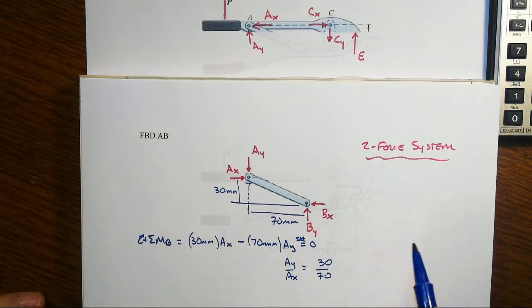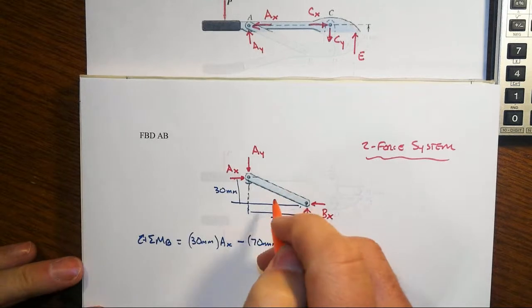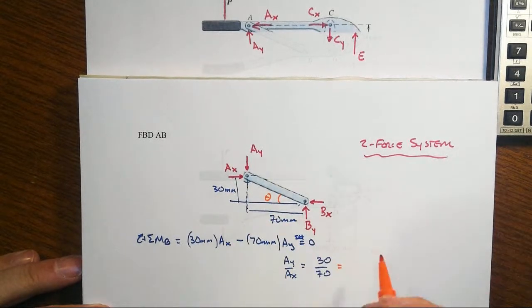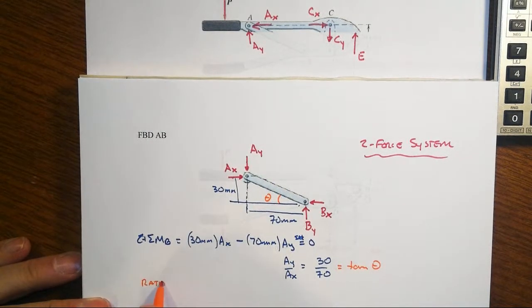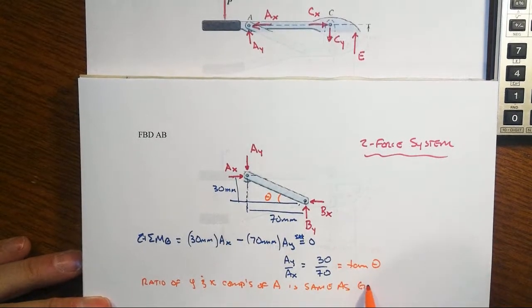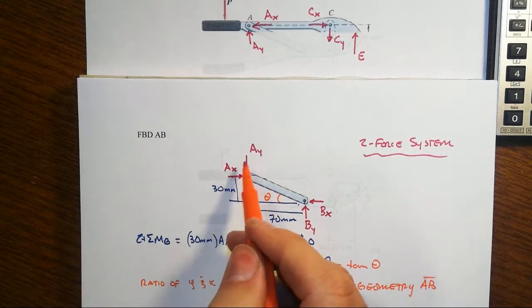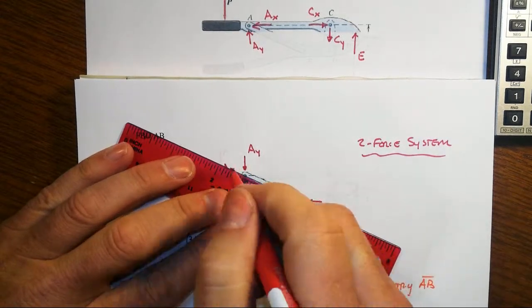Well now wait a minute, that is exactly the same ratio as this triangle. So what that tells me is if that angle is theta, then 30 over 70, opposite over adjacent, that's equal to tangent of theta. That says that the ratio of the Y and X components of A is the same as the geometry of the line segment AB. That when I resolve Ax and Ay to a single force, they're going to have to have a line of action that is directly from A to B.